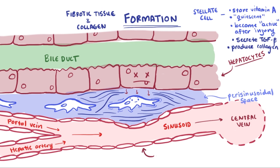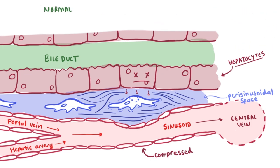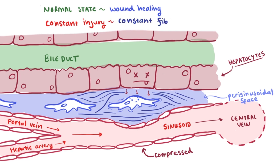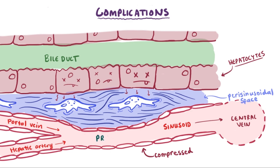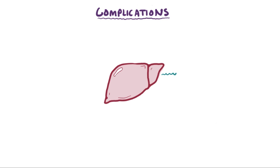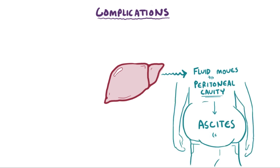As this fibrotic tissue builds up, it starts to compress the central veins and sinusoids. In a healthy state, stellate cells play key roles in natural wound healing, but when liver cells are constantly injured, the stellate cells are constantly activated, so they constantly produce collagen and factors that lead to fibrosis. This is when complications due to cirrhosis start to crop up. As those central veins and sinusoids become compressed, their pressure starts to build up, leading to intra-sinusoidal, or portal hypertension — higher pressure in the portal veins.